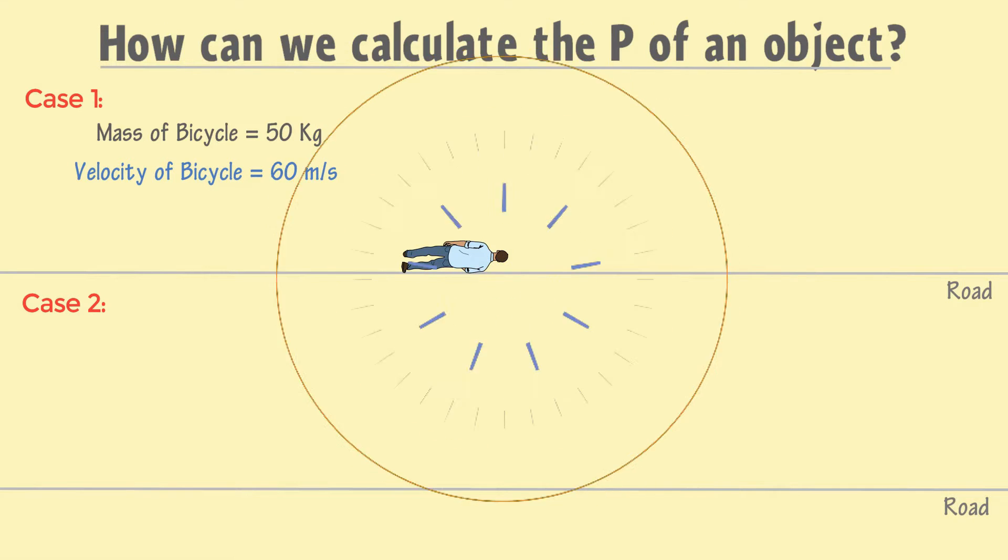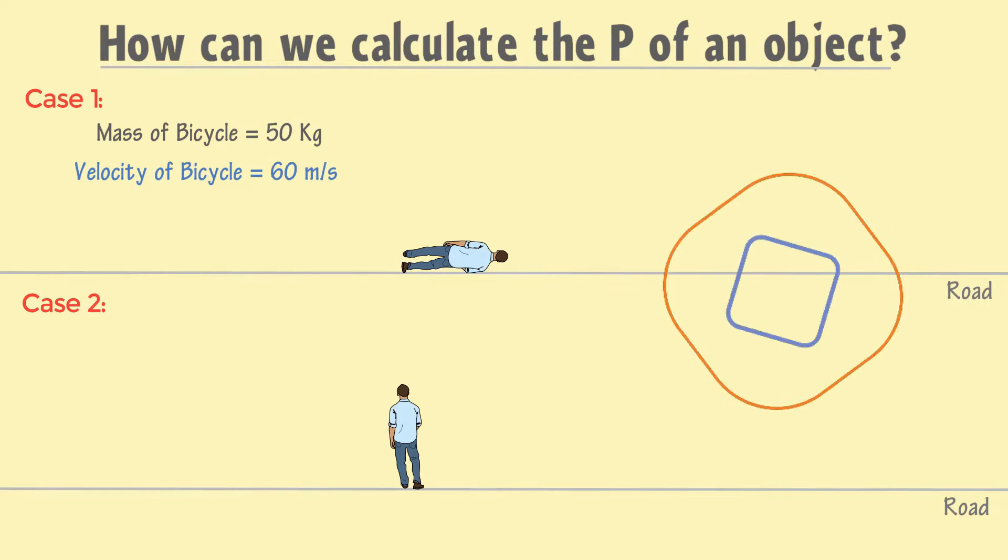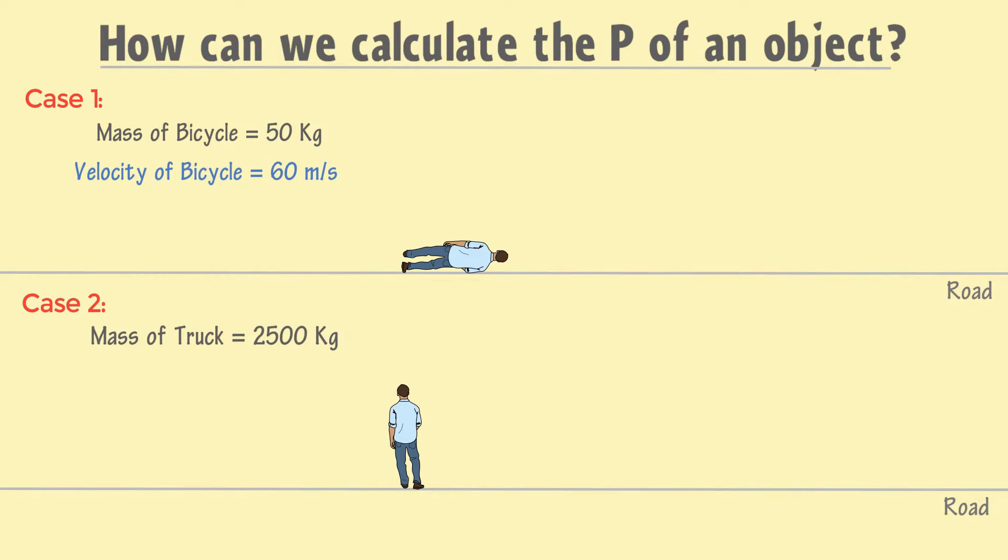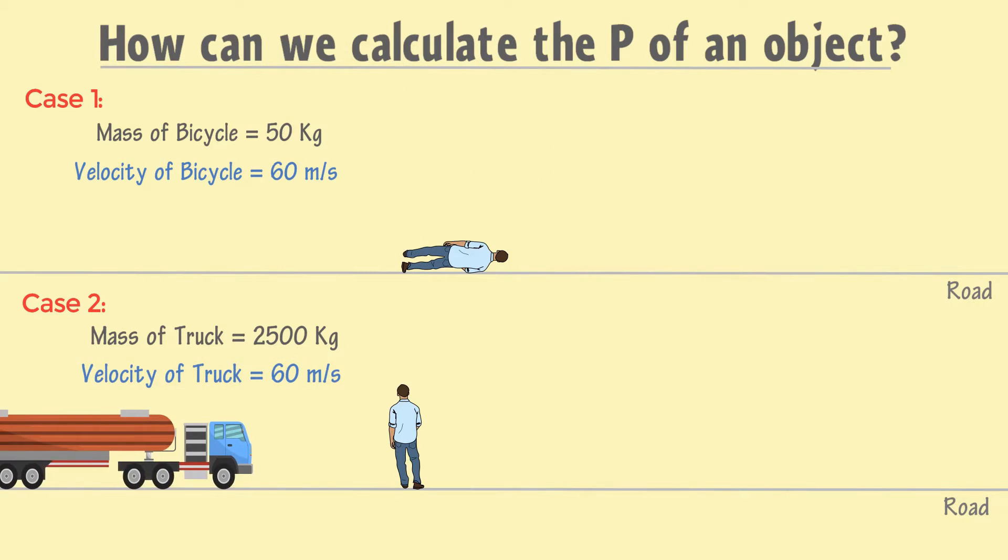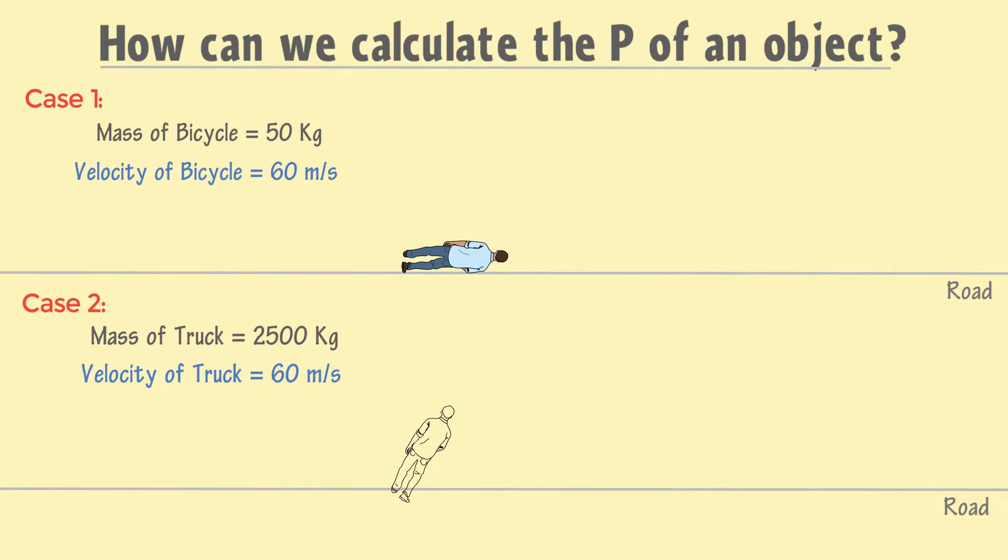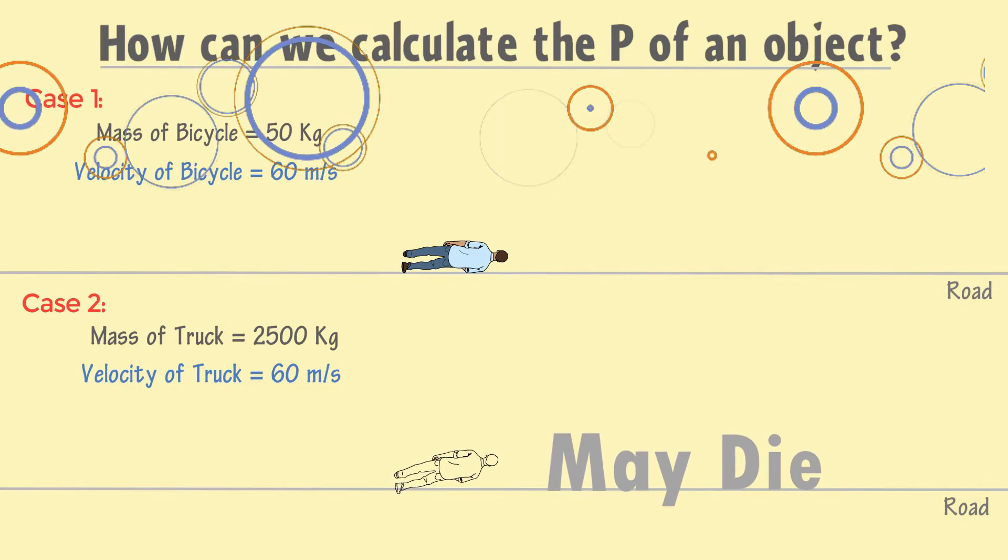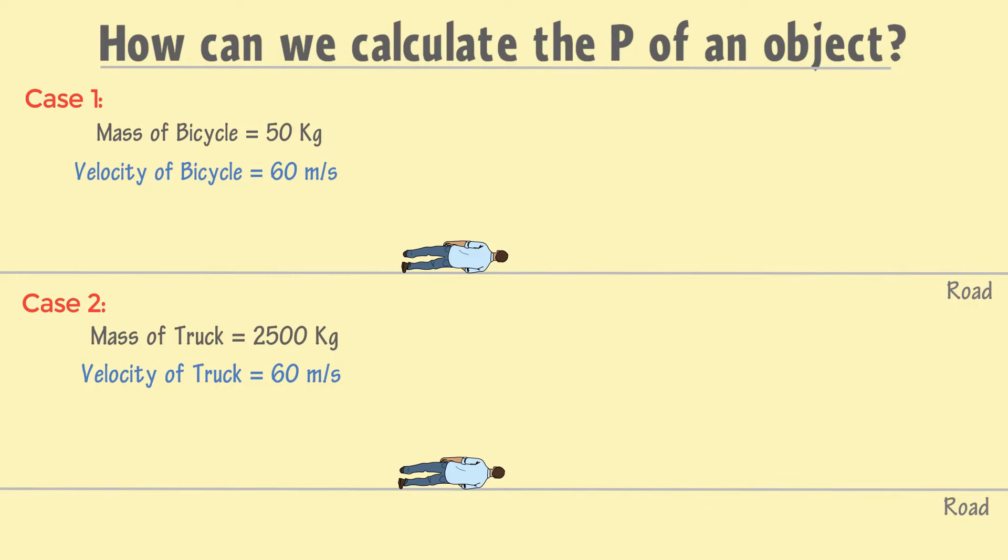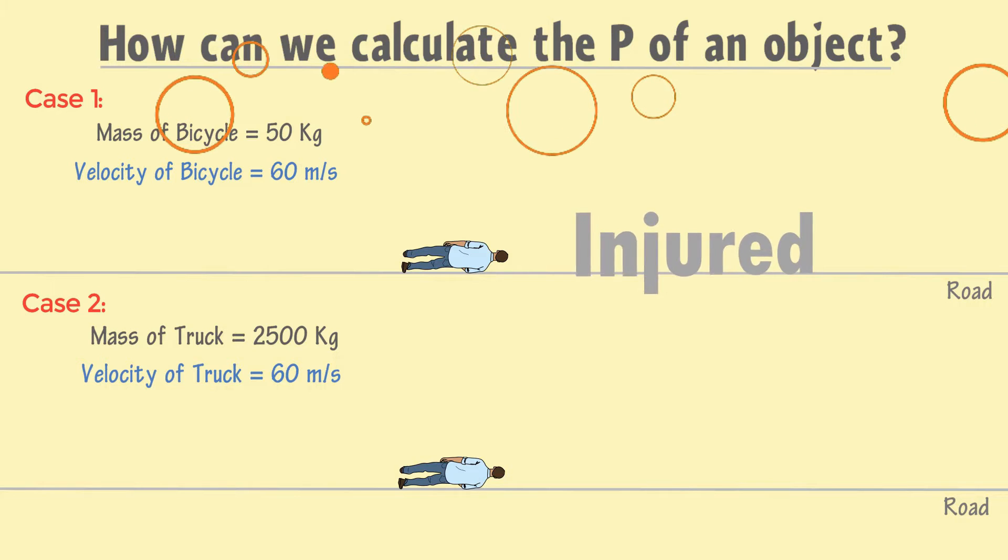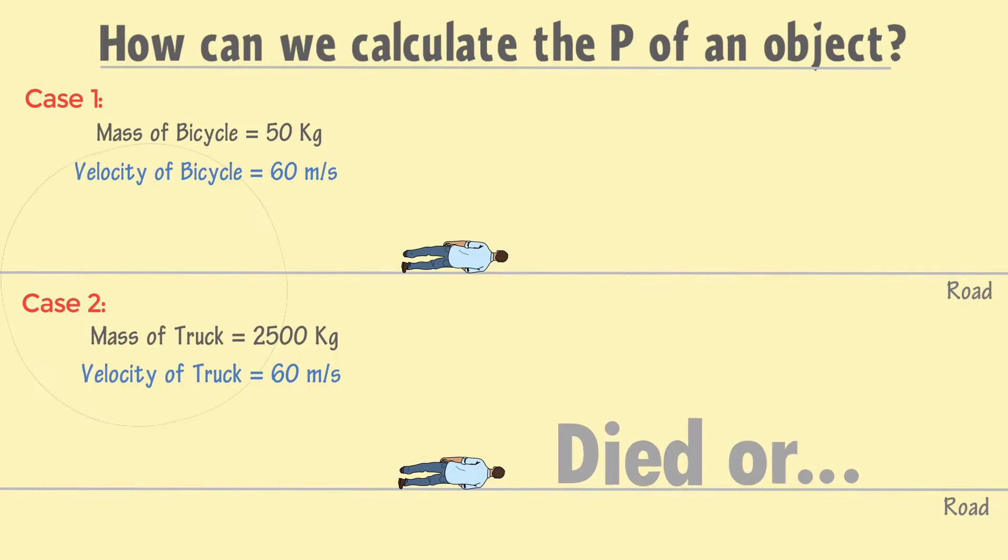In case 2, if this person is standing on a road, now suddenly a truck of 2500 kg moving with the same velocity of 60 meter per second hits the person. As a common observation, the person may die. Can you guess that a person in case 1 is only or merely injured, while the person in case 2 either died or is in serious condition?